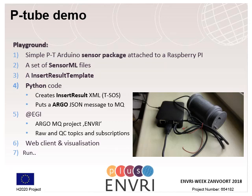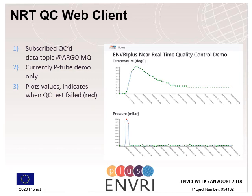At EGI, we have set up an Argo message project called Enread, which is able to collect these messages. Further, we have set up a simple web client visualization tool, which is very useful to see the results. The near-real-time quality control web client subscribes to the data topic at the Argo messaging queue and currently supports only the p-tube demo, as this is the only data we have for testing. The web client plots values and indicates when the quality control test has failed by adding red dots.